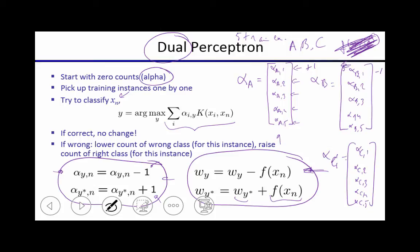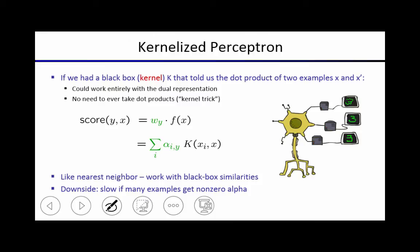So far this is just mechanics. We've got the mechanics in place, now we're going to look at why we might care about this. What's interesting here is that what we found is that you can compute the score for a label y and input x, originally in the original perceptron as a weight vector w_y times f(x), but now as a weighted sum of similarity computations. So what we have now, we have something like nearest neighbor computations. If you get a new example in, what are you doing? You're computing similarity with training examples, and then you're taking a weighted sum of those similarity scores.